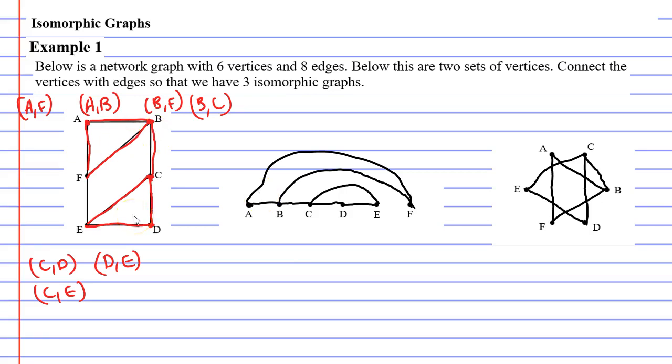Alright, looking at vertex E we already know it connects to C and connects to D. We can also see that E connects with F. So we need to make sure that happens as well. E connects with F on both graphs.